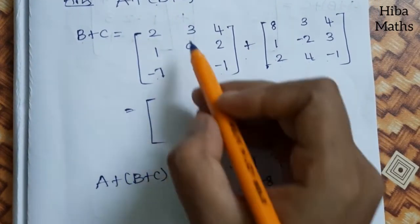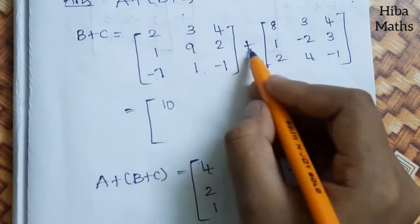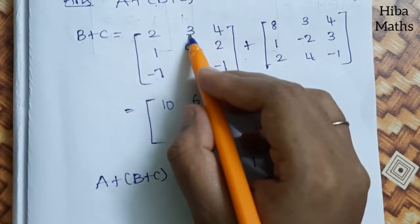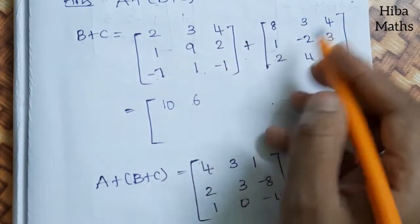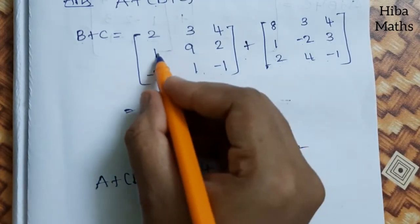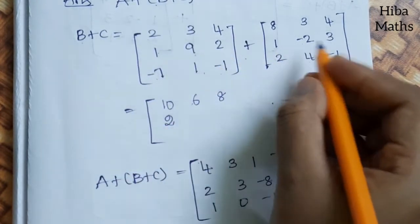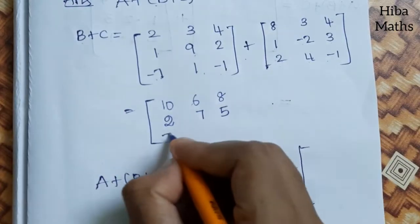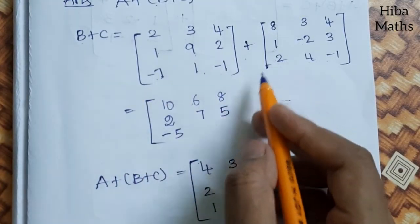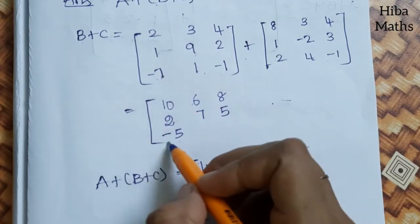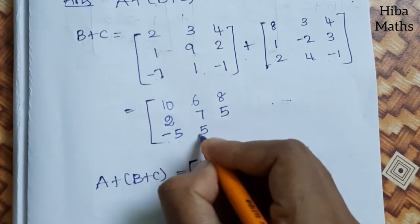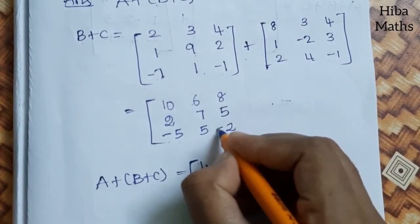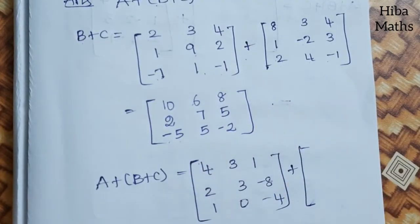Addition is very easy. 2+8=10, 3+3=6. For the middle row: 4+4=8, 1+1=2, 9+(-2)=7, 2+3=5. For the last row: -7+2 = minus 5 (since the larger number 7 has minus, the result is -5). 1+4=5, -1 plus minus 1: minus into plus gives minus, so minus 2. This gives us B + C.